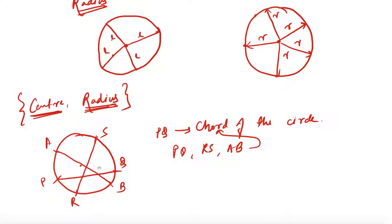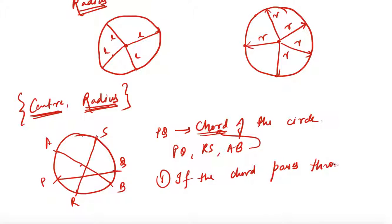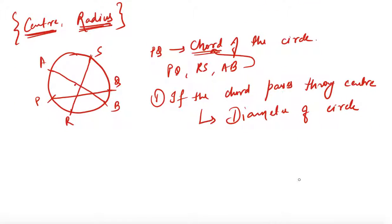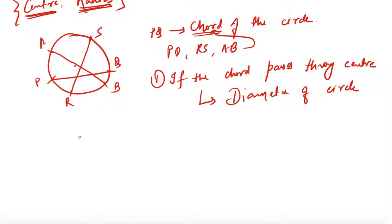Remember, it is not necessary that a chord should always pass through the center — it may or may not. Based on this, we have two cases: if the chord passes through the center, it is known as the diameter of the circle. If it does not pass through the center, then it is simply the chord of the circle.